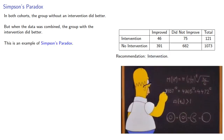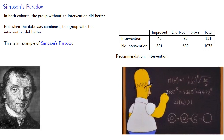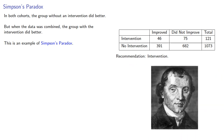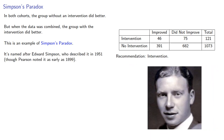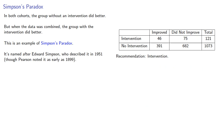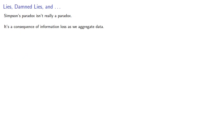It's named after — not a bad guess — but it's Edward Simpson, who first described it in 1951, though Carl Pearson and others noted it as early as 1899. Now, Simpson's paradox isn't really a paradox. It's a consequence of information loss as we aggregate data.